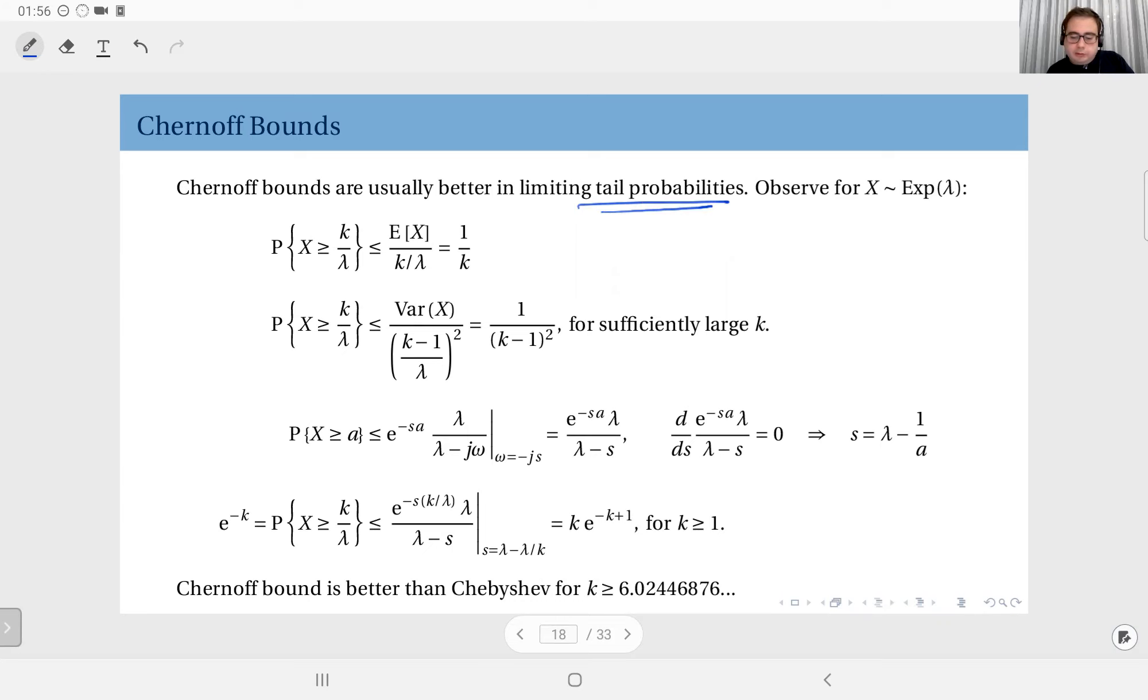For instance, here, let's look at a random variable X, which is an exponential random variable with the rate parameter of lambda. If you remember, the expected value of this is 1 over lambda.